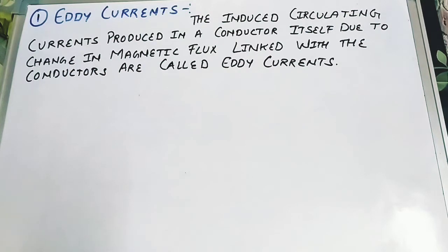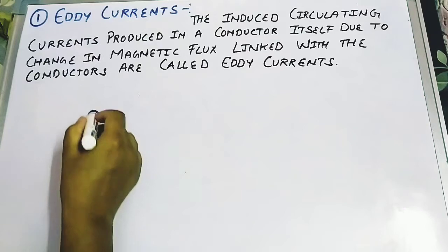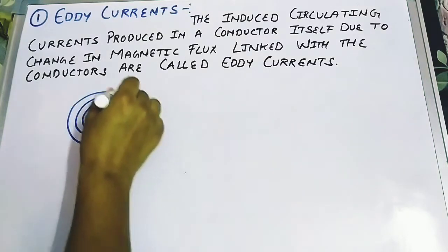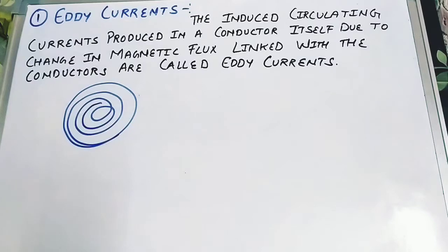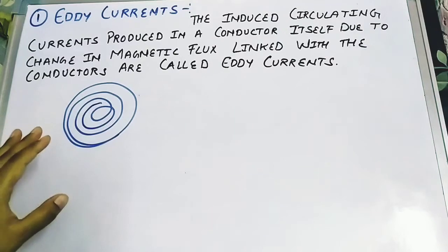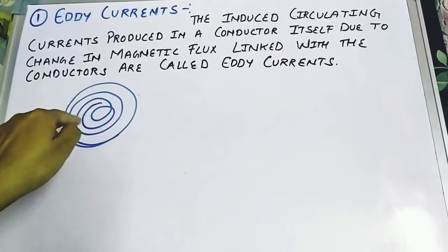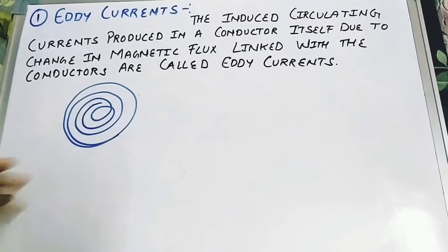In this part we are going to learn about eddy currents. This word 'eddy' has come from the word 'eddies.' Eddies are something which is swirling — you have observed when the washing machine is rotating, or when you remove something stuck in a sink, the water starts flowing in a circulating manner. That circulating flow is what we call eddies.